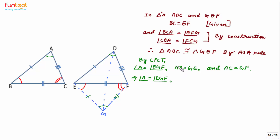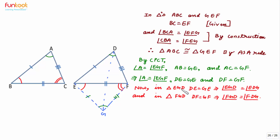We are given that AB is equal to DE, so we can write DE is equal to GE. Now in triangle EGD, DE is equal to GE, meaning this side is equal to this side. Since angles opposite equal sides are equal, angle EGD is equal to angle EDG.